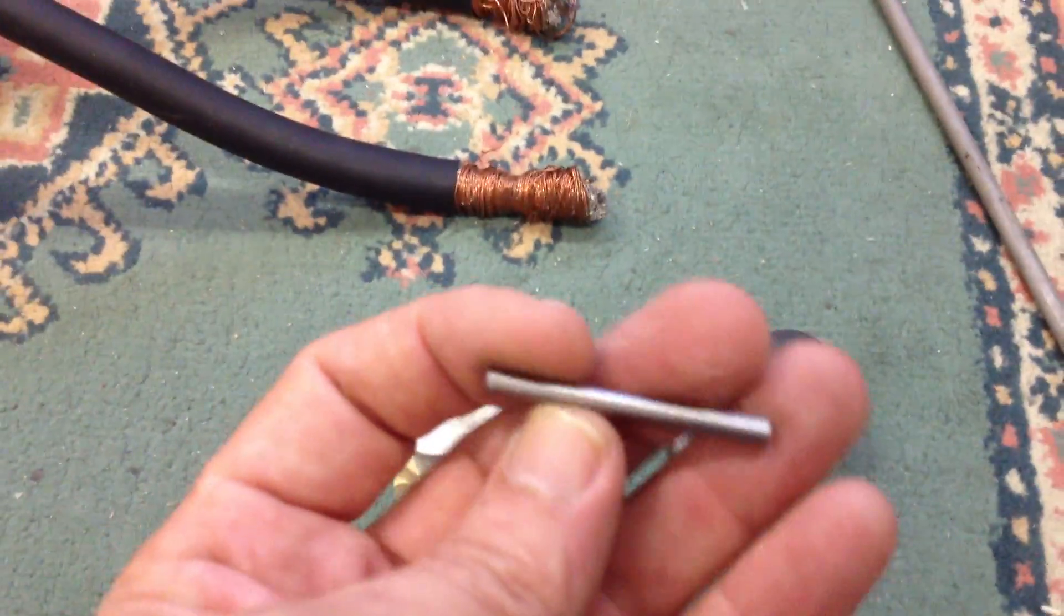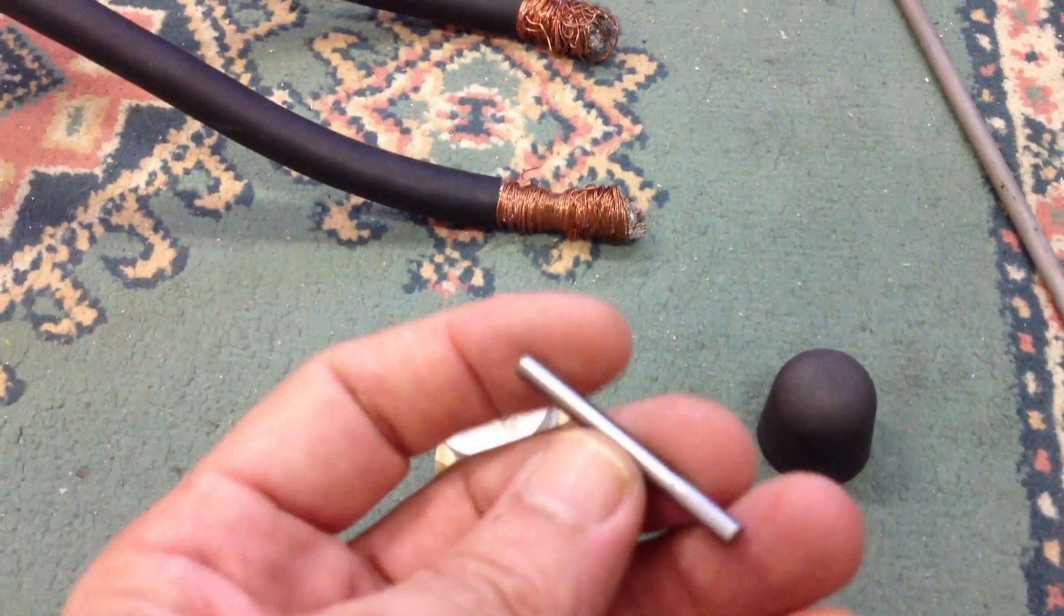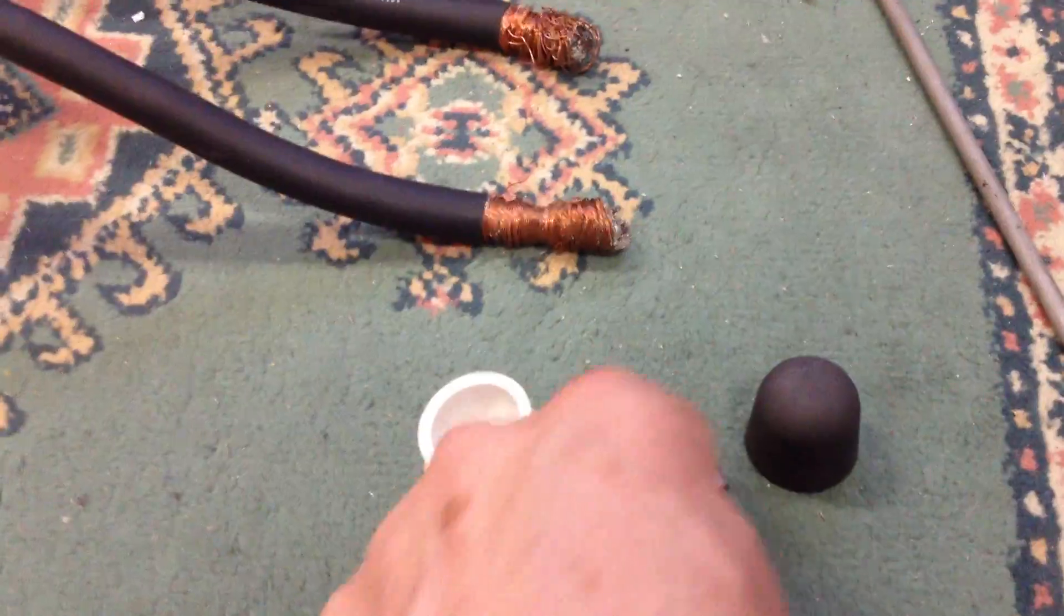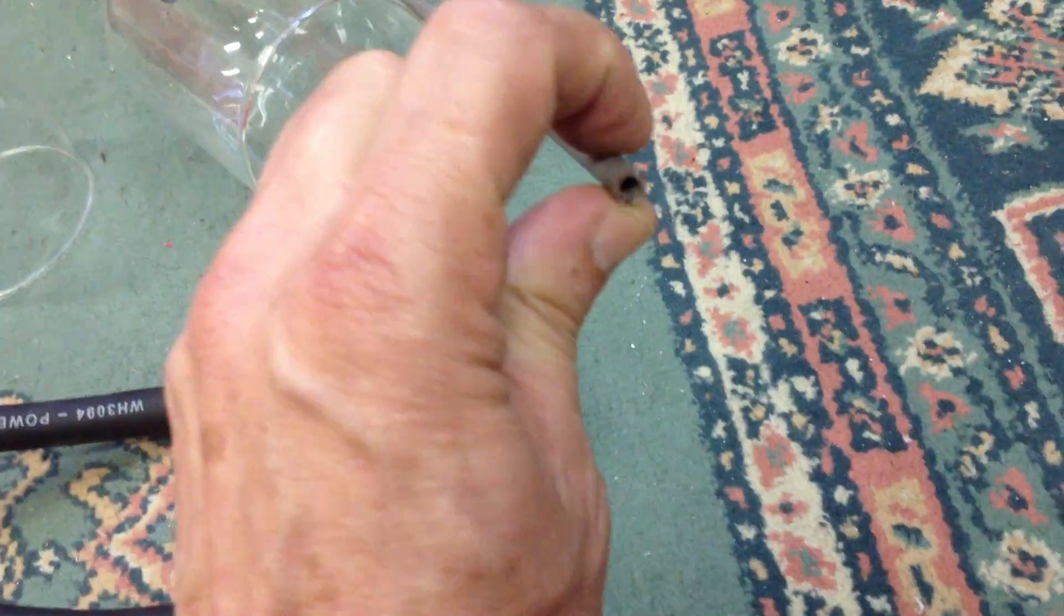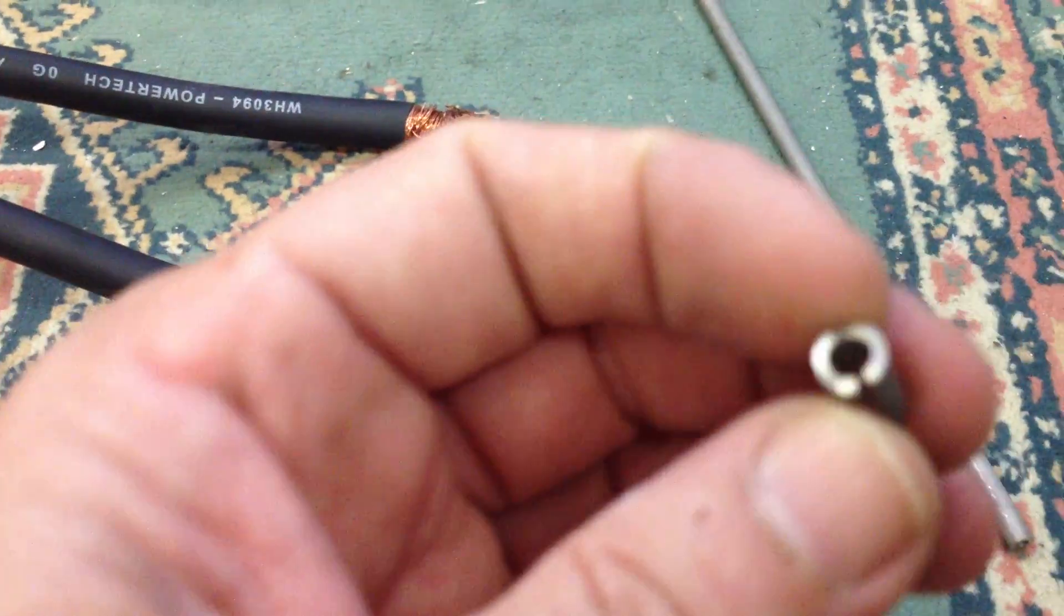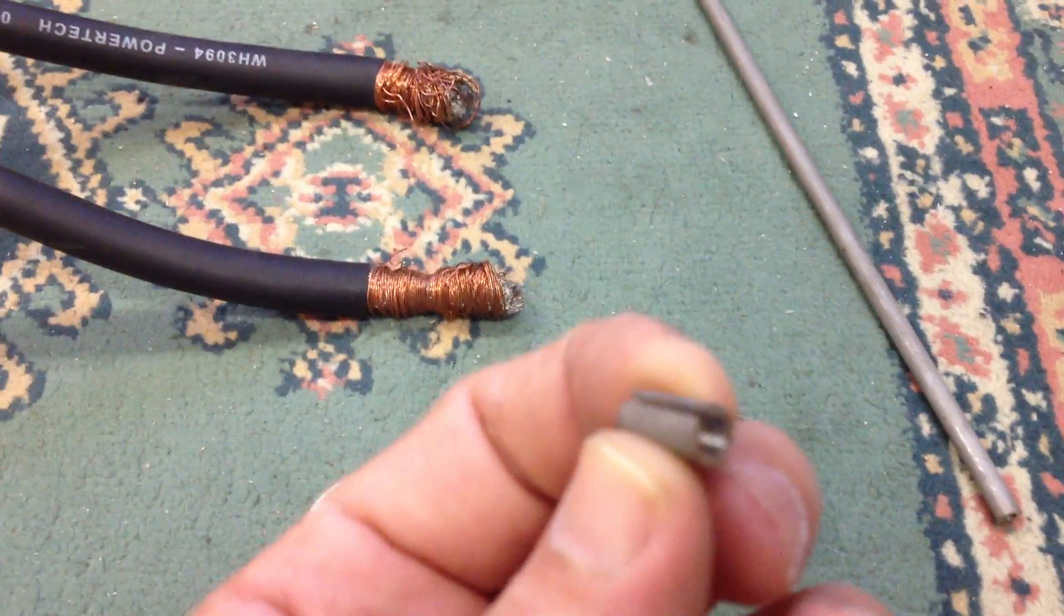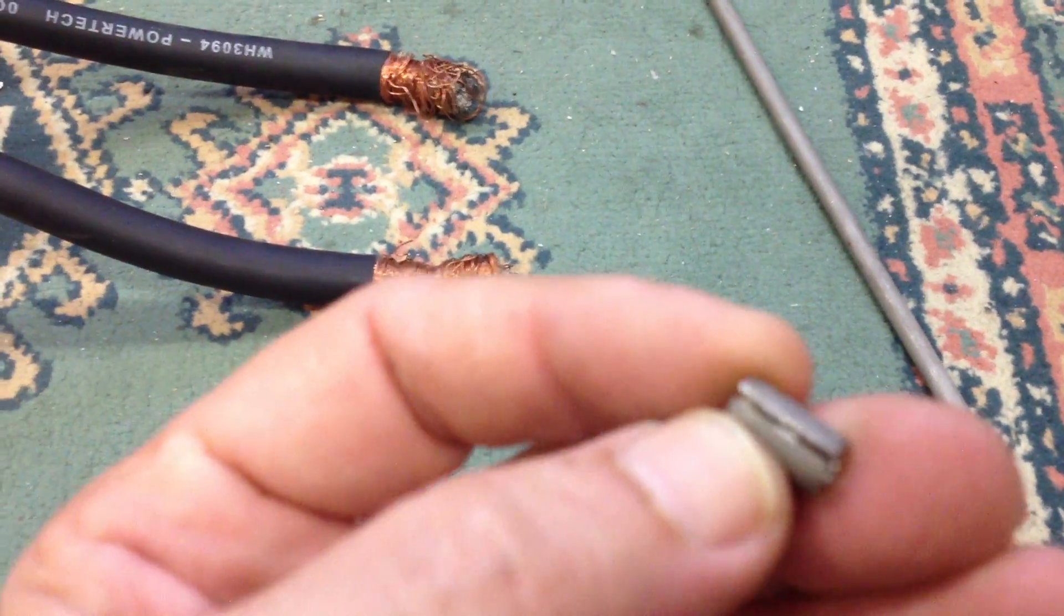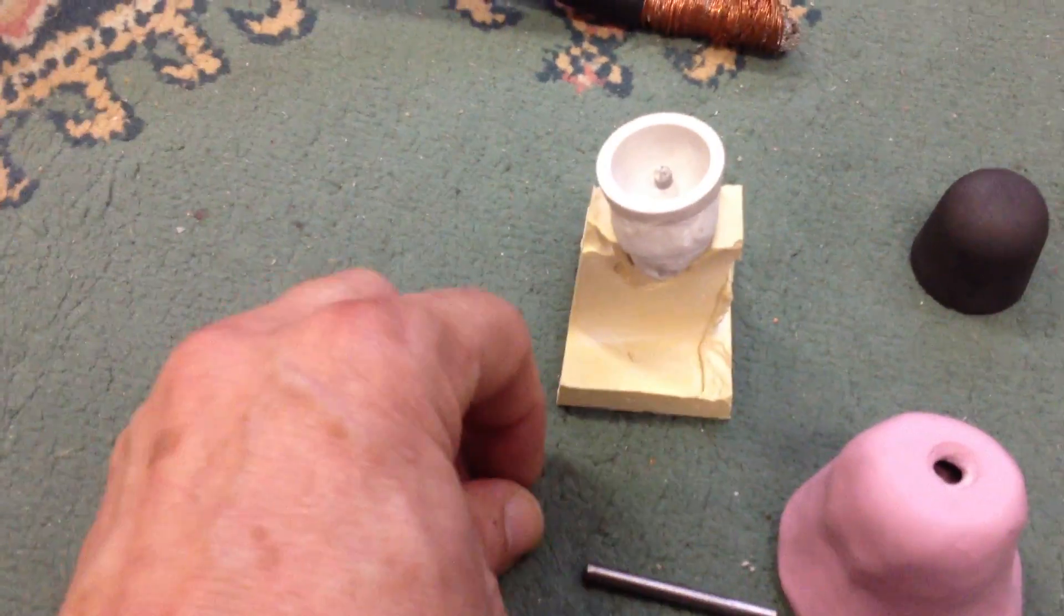What I'm using is 4mm thoriated tungsten electrodes. I've cut them to size. And for the connectors, I've got some stainless steel tube. I've cut a certain length of it. I've ground out the inside so it's nice and clean for a positive contact.